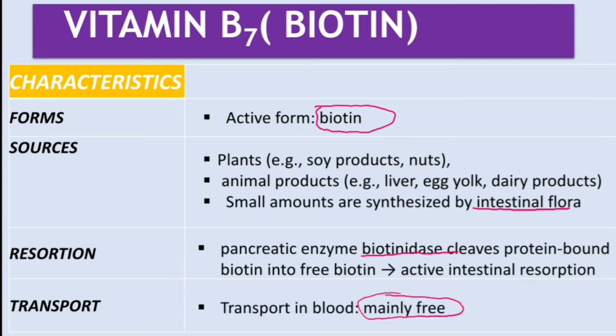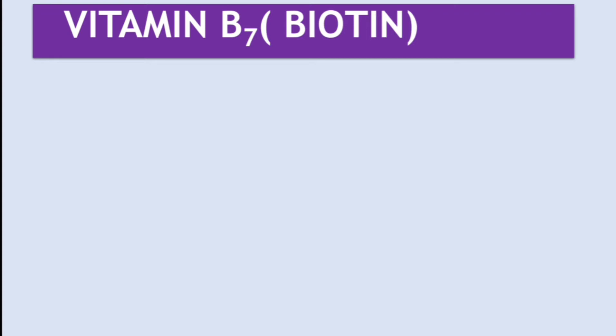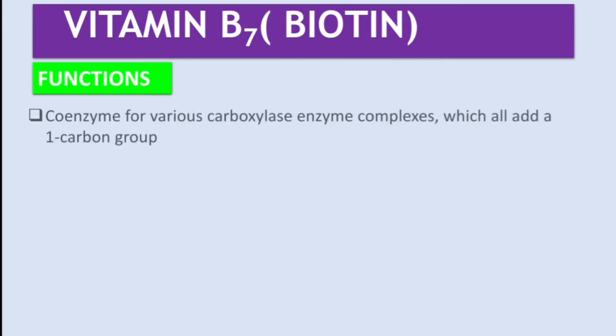For transport, this vitamin is transported freely in the blood. Now let's talk about the functions of vitamin B7. Biotin is a coenzyme for various carboxylase enzyme complexes, which all add a one-carbon group. The enzymes that use biotin as a cofactor are carboxylases.